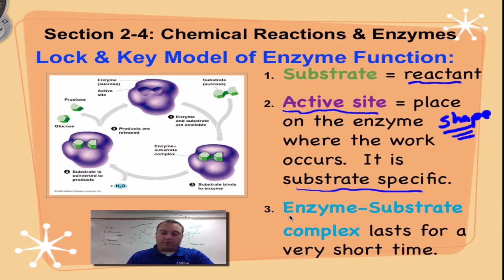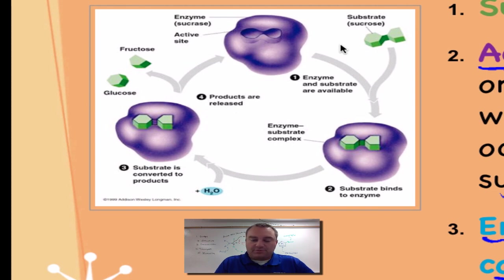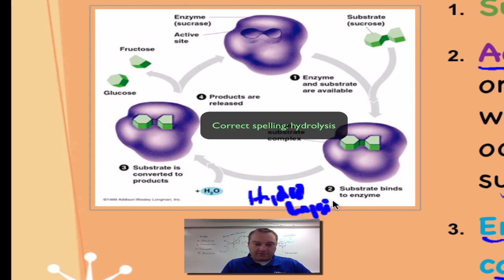The third key vocabulary word is the enzyme substrate complex. This is a very short-lasting thing, but it's when the enzyme has the substrate in the active site, and it's the time where the actual work happens. All right, I want you to focus on this picture here to the left. You may actually even have this picture in your textbook or something very close to it. All right, this is your substrate, and in this case, this one is sucrose. There's glucose right there, and there's fructose, and it's held together by a bond that was made through dehydration synthesis. So what we're going to do in this picture is we're going to do hydrolysis.